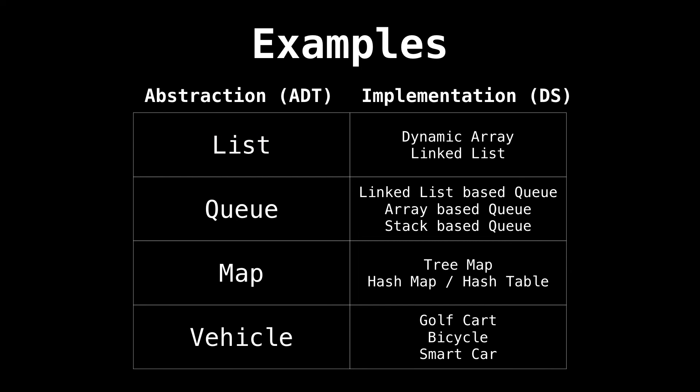Here are some examples of abstract data types on the left, and some possible underlying implementations on the right hand side. As you can see, a list can be implemented in two ways. You can have a dynamic array or linked list. They both provide ways of adding, removing and indexing elements in the list. Next, we have a queue and the map abstract data types, which themselves can be implemented in a variety of ways.